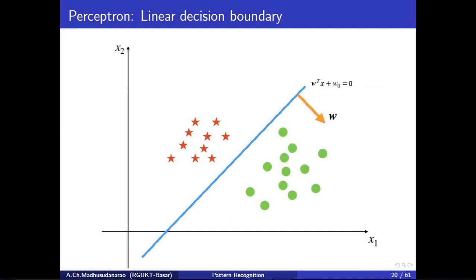Let us have a look into linearly separable classes. Assume this is class 1 and these samples correspond to class 2 — omega 1 and omega 2. These two class samples can be separated with the help of a line. When you go to higher dimensional space — n-dimensional or d-dimensional where d greater than 2 — we call this line a hyperplane. The hyperplane is the separating boundary between class 1 and class 2, expressed as w-transpose*x plus w0 equals 0.